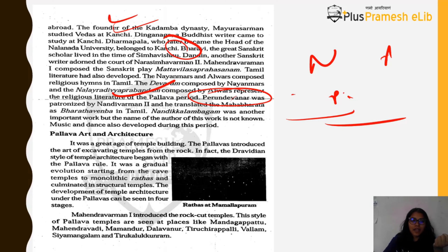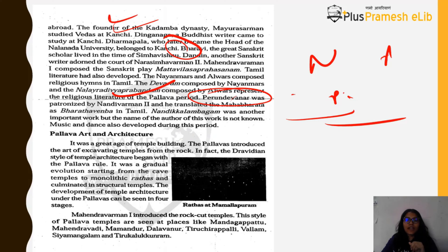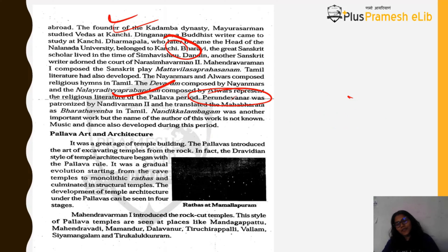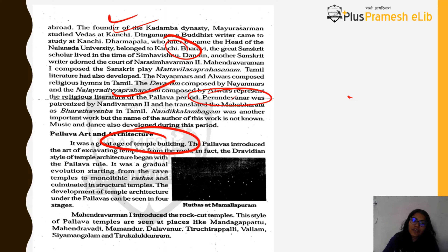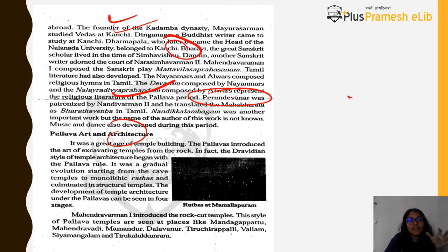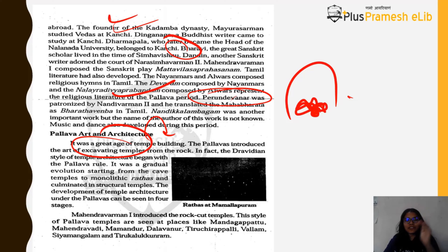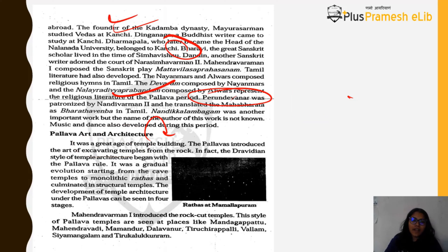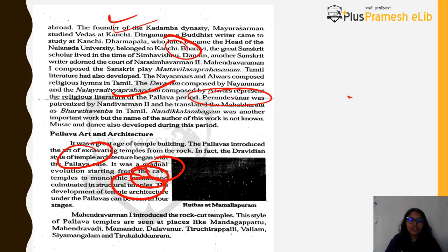Now the very important part: Pallava art and architecture. The Pallavas started the age of great temple-building in South India — the Dravidian style. They introduced the art of excavating temples from rock. It was a gradual evolution: from cave temples (introduced by Mahindra Varman I, seen at places like Mandagapattu, Mahendravadi, Mamandur, Dalavanur, Tiruchirappalli, and Vallam), to monolithic raths (under Narasimha Varman I), and finally to full structural temples. With each Pallava ruler came specific elements of art and architecture — the Dravidian style of architecture began from the Pallava rule.